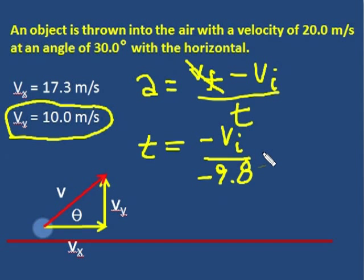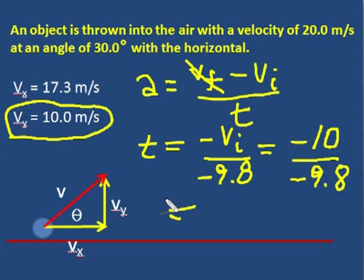is equal to negative Vi over the acceleration, which is minus 9.8 meters per second squared. Remember, when we throw something upwards, it's minus 9.8 always. Therefore, the initial velocity is minus 10 divided by minus 9.8. And we find that the time equals, work it out, 1.02 seconds. Now you should try this yourself.